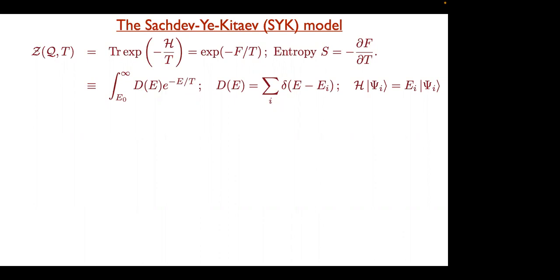These are actually quite remarkable properties. You have to do a little bit of coarse-graining. Roughly this happens because the Hilbert space is so large — the Fock space is 2^N in size — and the states are extremely chaotic. That's really the defining property of this model: it's extremely chaotic and self-averages better than almost anything else.